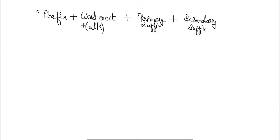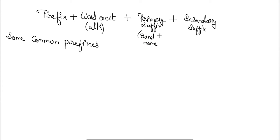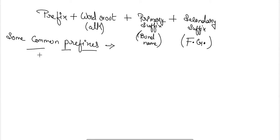Now we are going to discuss some common prefixes. In the last class we discussed about the primary suffix, generally known as the bond name. The secondary suffix can be termed as the primary functional group. Now let's talk about some of the functional groups which are not regarded as the principal functional group.